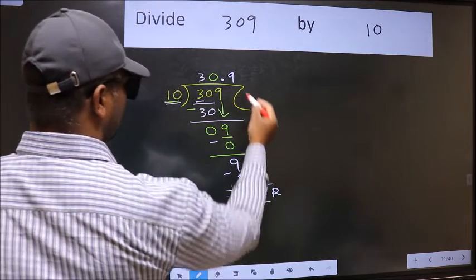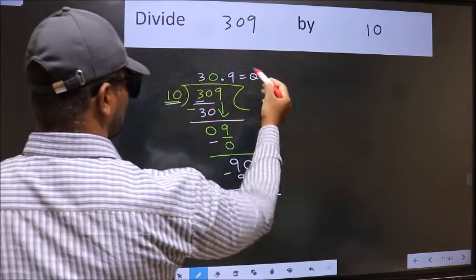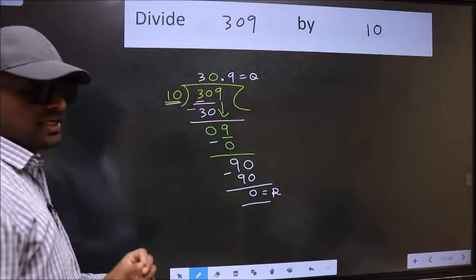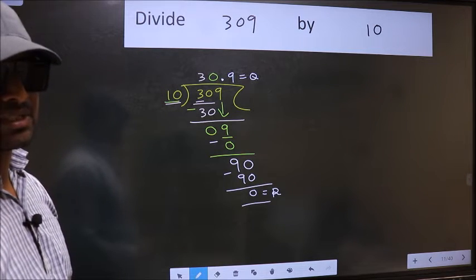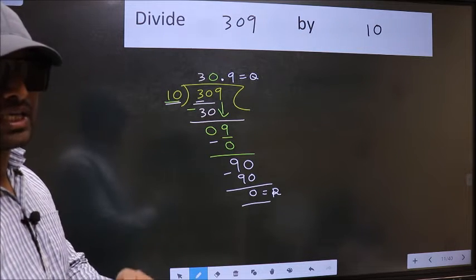This is our remainder, and this is our quotient. Did you understand where the mistake happens? You should not do that mistake.